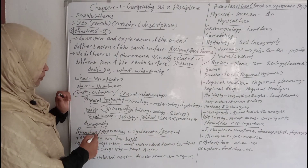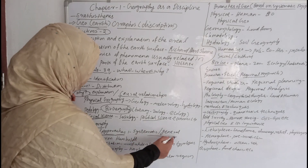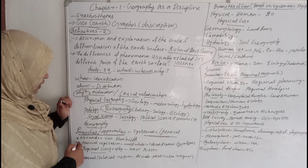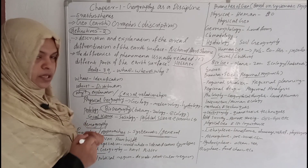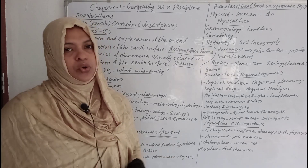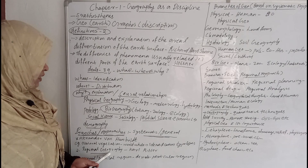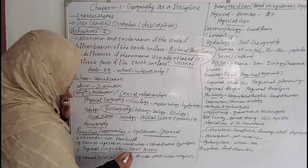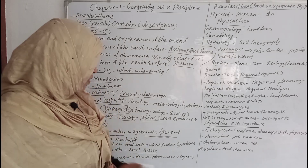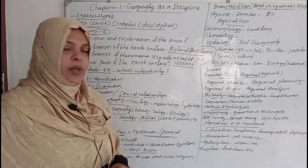Next, Branches or Approaches of Geography. There is a systematic or general approach, associated with Alexander Von Humboldt, which studies topics like Natural Vegetation. There is also a Regional approach, which involves the study of a whole region compared to another region.